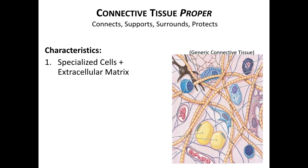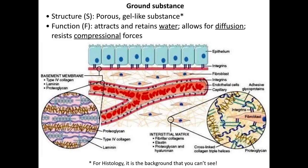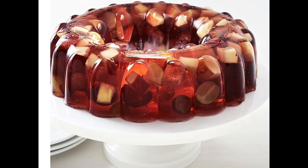All the different types of connective tissue have specialized cells in an extracellular matrix. The matrix consists of the ground substance and the fibrous proteins within it. For connective tissue proper, the consistency of the ground substance is kind of like a viscous gel-like fluid — you're never going to see this in histology, it's really the background. While it's largely water, it also contains carbohydrate-protein complexes that cause it to soak up and retain water, allowing for the diffusion of materials to and from the body cells. Like any liquid, it's also going to resist compressional forces. You could think of stepping on an empty plastic water bottle versus stepping on one filled with water, which resists compression from an outside force.